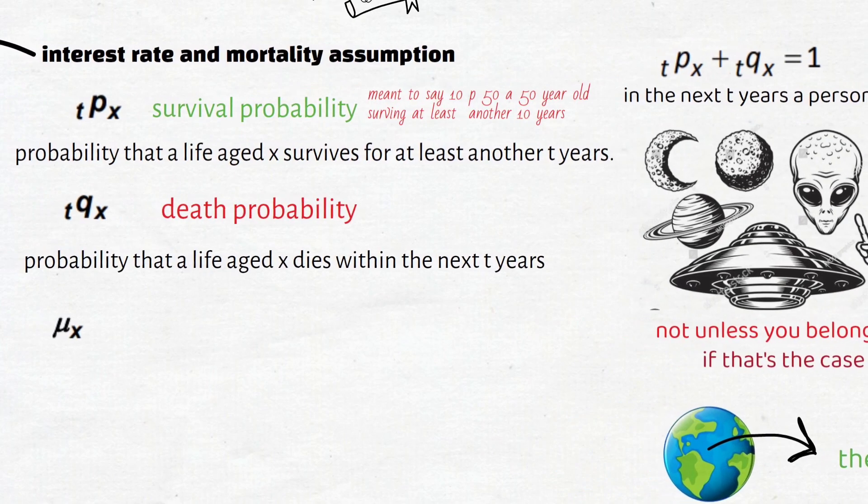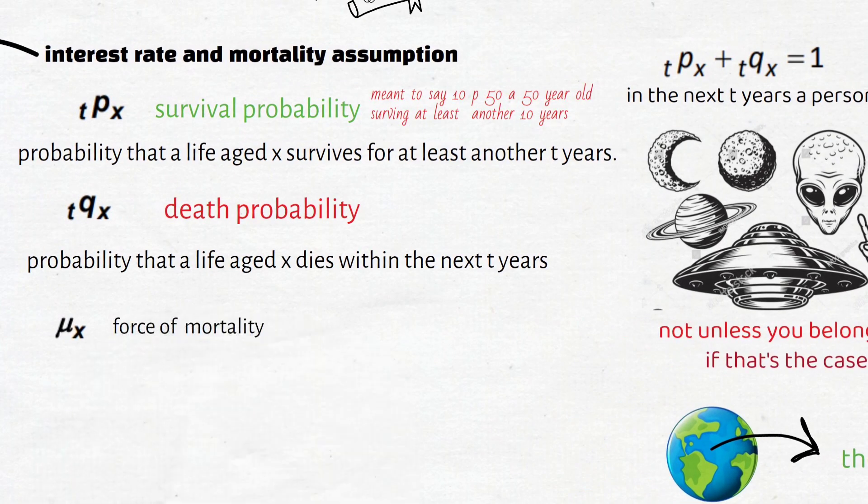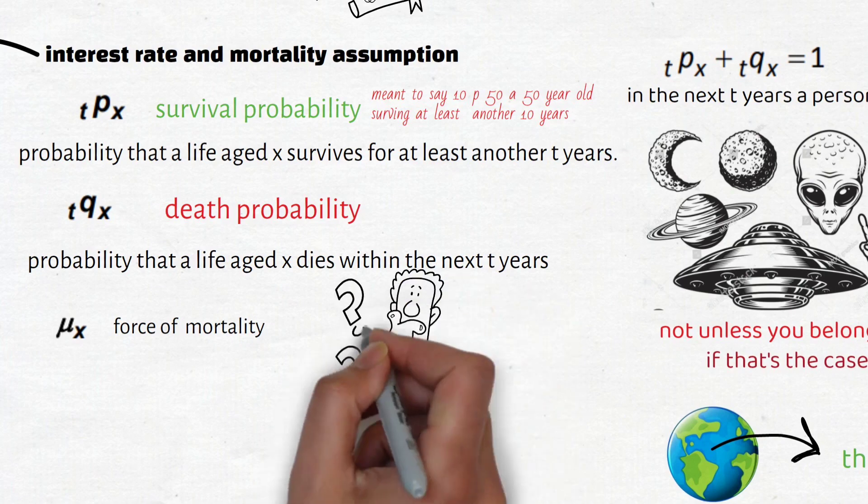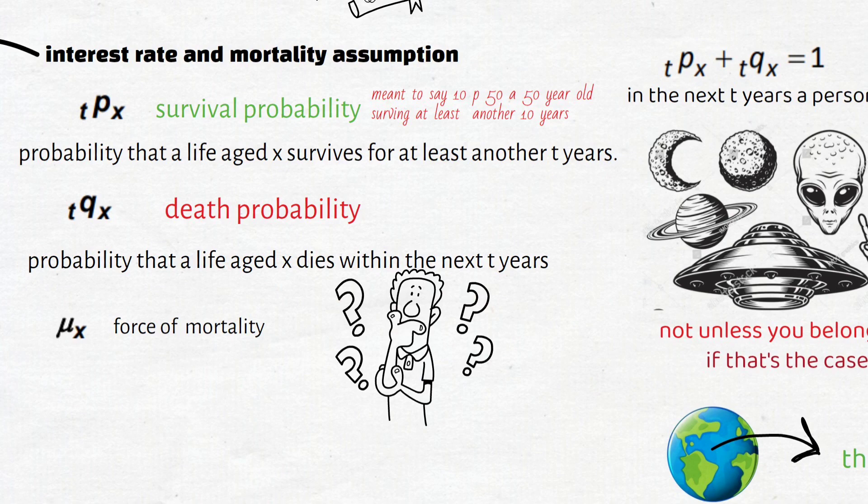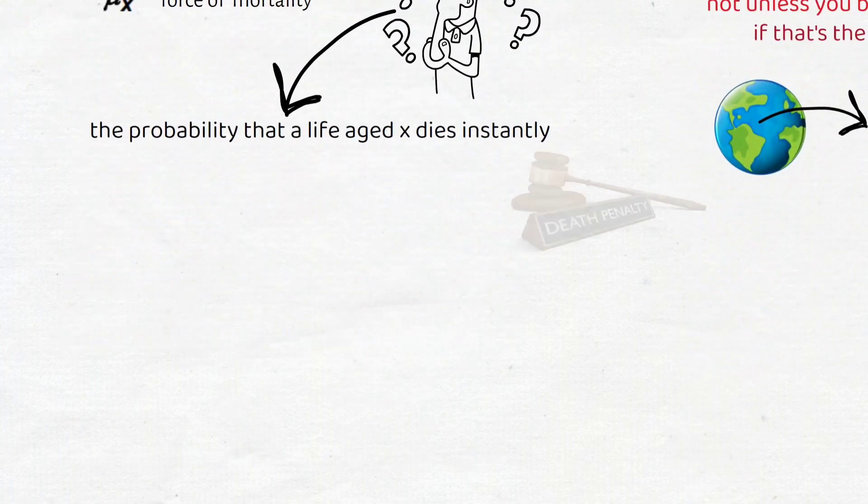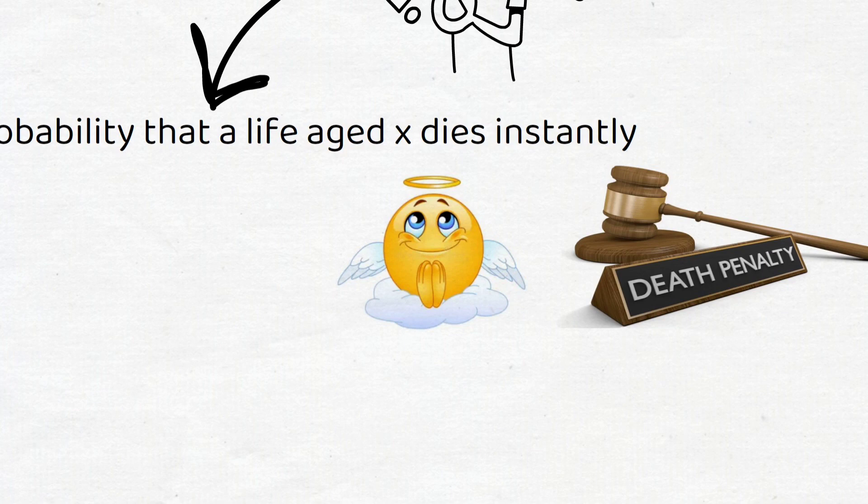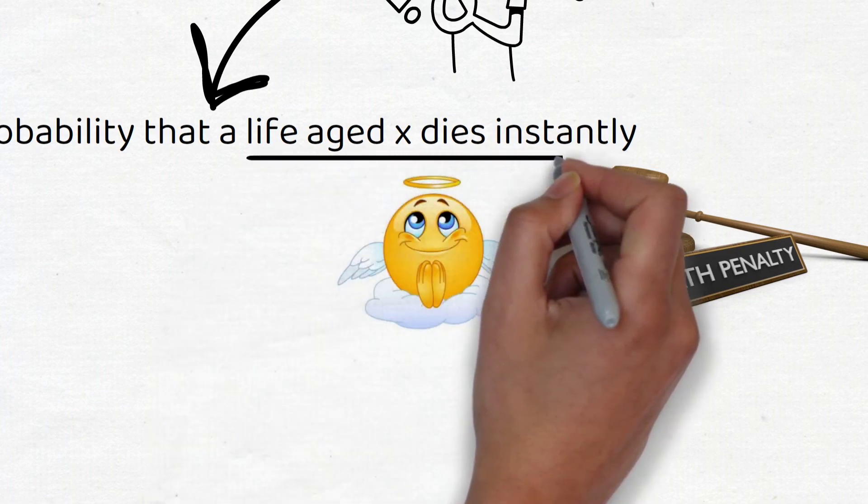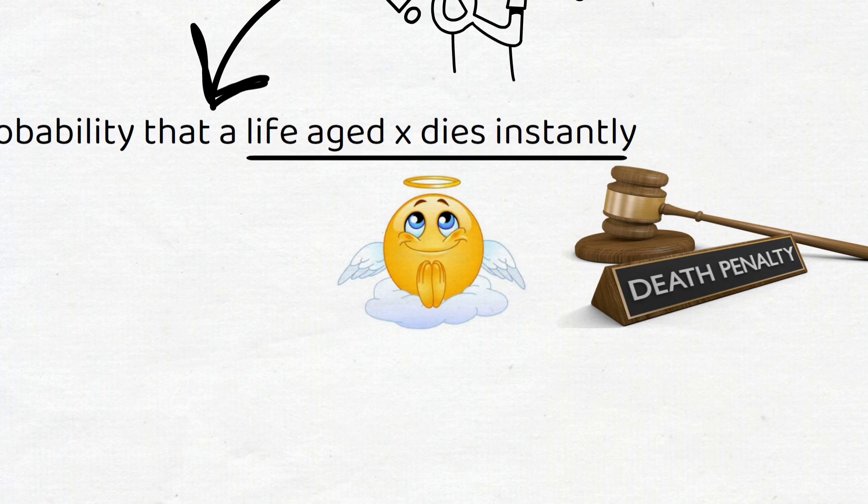And then mu x is the force of mortality. This one is a bit tricky to understand and explain, well at least for me. The way I think of it is that mu x represents the probability that a life aged x dies instantly, like in a very short time interval. So a life aged x dying in the next minute for example would be mu x, the force of mortality. Like we are forcing you to die? No. But mu x is just a probability of a person dying instantly, a person dying at that same exact age. So if you are 50 years old, it would be the probability of you dying in the next couple of minutes.